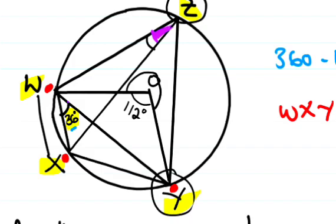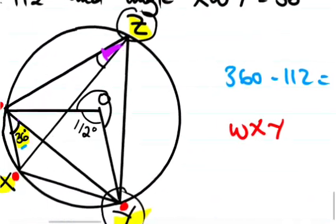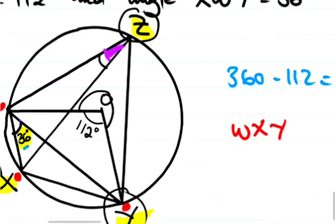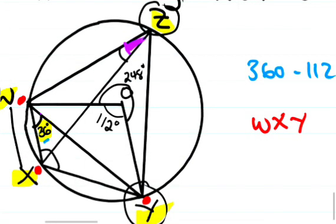In this second method, the reflex angle WOY was already 248 degrees. So the angle at the center using the major arc is 124 degrees. We confirm angle WZX using this approach as well.